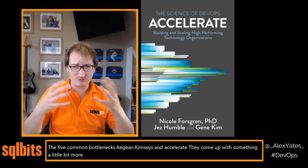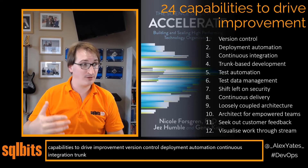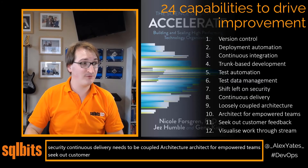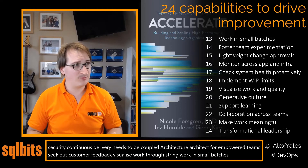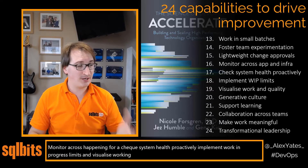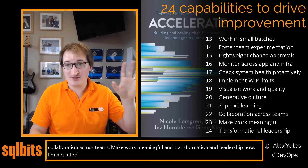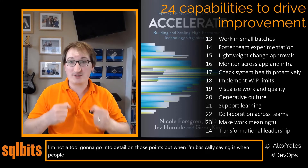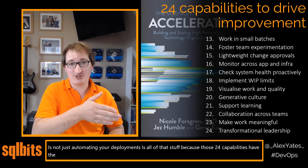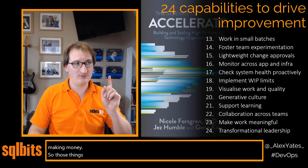In Accelerate they come up with something more specific: 24 capabilities to drive improvement. Version control, deployment automation, continuous integration, trunk-based development, test automation, test data management, shift left on security, continuous delivery, loosely coupled architecture, architect for empowered teams, seek out customer feedback, visualise work through stream, work in small batches, foster team experimentation, lightweight change approvals, monitor across app and infra, check system health proactively, implement work in progress limits, visualise work in quality, generative culture, support learning, collaboration across teams, make work meaningful, and transformational leadership. When people ask what is DevOps, it's not just automating your deployments — it's all of that stuff, because those 24 capabilities have a causal relationship with the four key metrics, which have a causal relationship to making money.